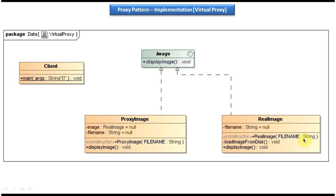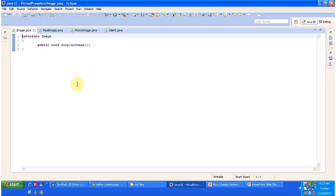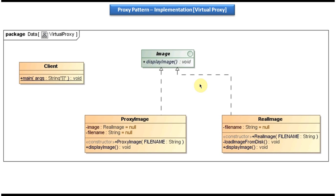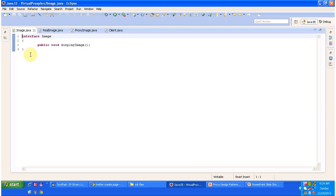To avoid creating this kind of expensive object, we can use this virtual proxy. Now we will see the code in Eclipse. I have opened Eclipse. Here we have the image interface, and that image interface is implemented by two concrete classes: proxy image and real image. I will open these Java classes and show you the code. The image interface has the display image method, which is an abstract method.